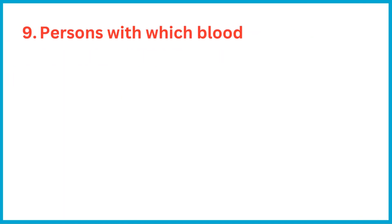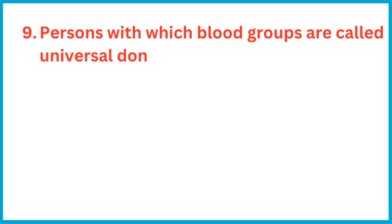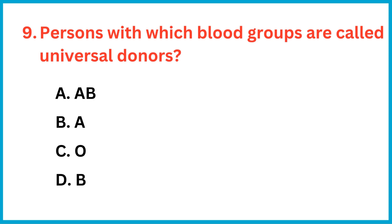Persons with which blood group are called universal donors? The correct answer is option C: O.